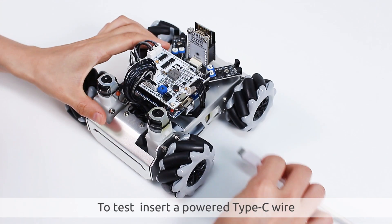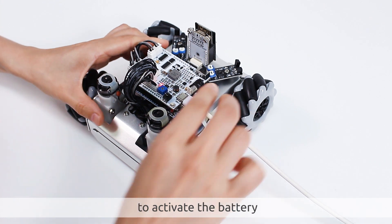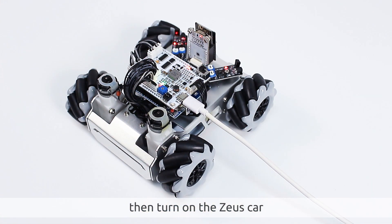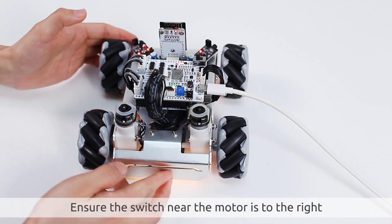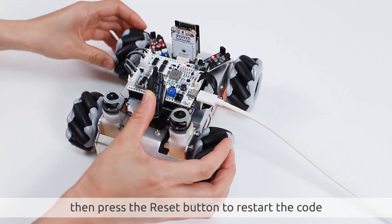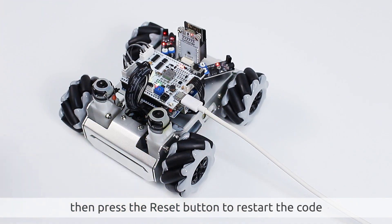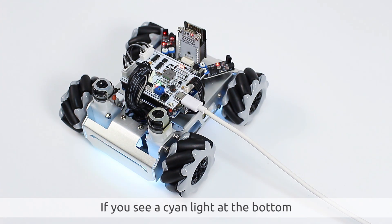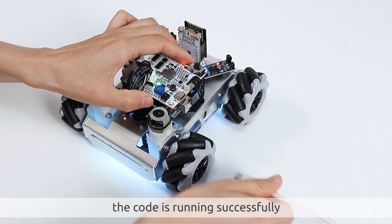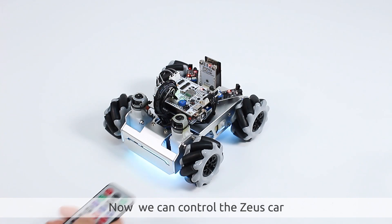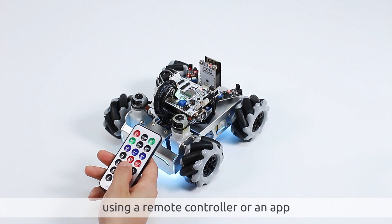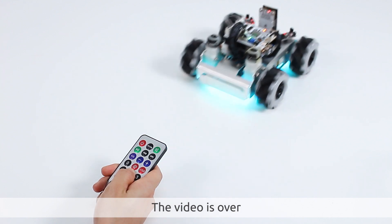To test, insert a powered Type-C wire to activate the battery, then turn on the Zeus car. Ensure the switch near the motor is to the right, then press the reset button to restart the code. If you see a cyan light at the bottom, the code is running successfully. Now we can control the Zeus car using a remote controller or an app. The video is over.